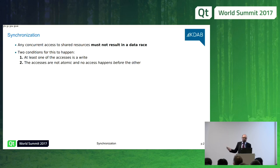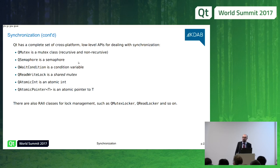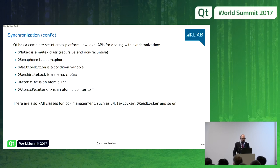Qt offers a complete set of low-level APIs for dealing with synchronization. You have a mutex represented by QMutex, which supports both recursive and non-recursive modes. You have a semaphore — a counting mutex that protects a number of resources, not just one. There are condition variables, read-write locks or shared mutex, and atomics including atomic integers and atomic pointers. There are also RAII classes for lock management, such as QMutexLocker and QReadLocker, which help ensure you don't forget to unlock the mutex when returning from a function.